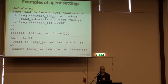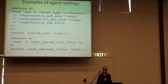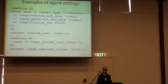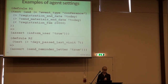Looking at the first example on the slide: the user wants to get information about all conferences where registration is not over, there is enough time to submit a paper, and the registration fee does not exceed 20,000 rubles — so the user writes a corresponding rule. In the second example, the user wants to receive a reminder letter if they haven't visited the system for more than a week.